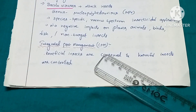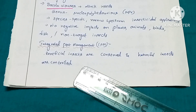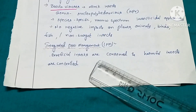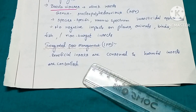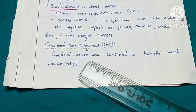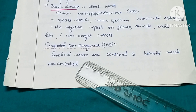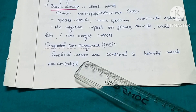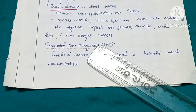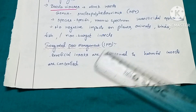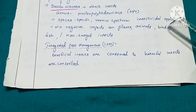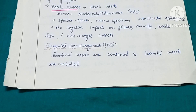The next concept is IPM — Integrated Pest Management. This means conserving beneficial insects while controlling harmful insects. For example, bees are beneficial insects that are helpful in pollination. Without pollination, there is no fertilization and no fruit formation. So in the IPM program, we enhance the growth of beneficial insects and control the growth of harmful insects.